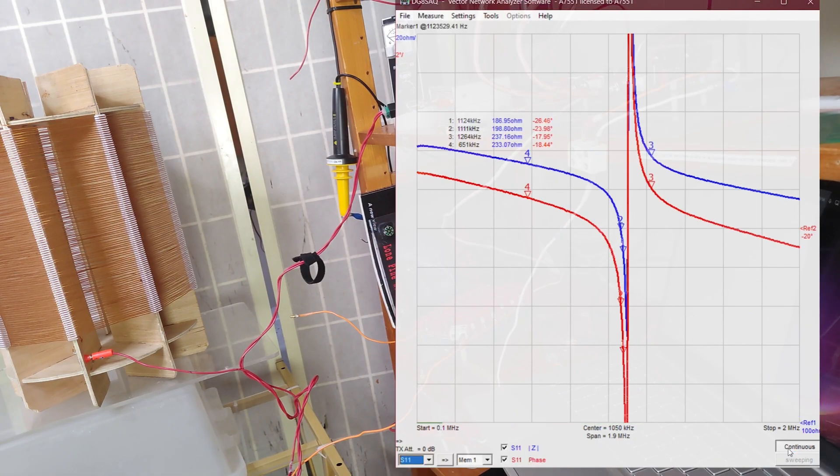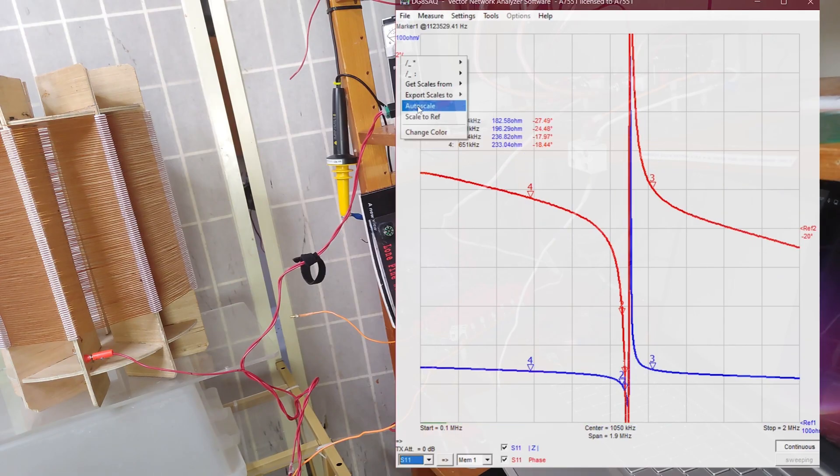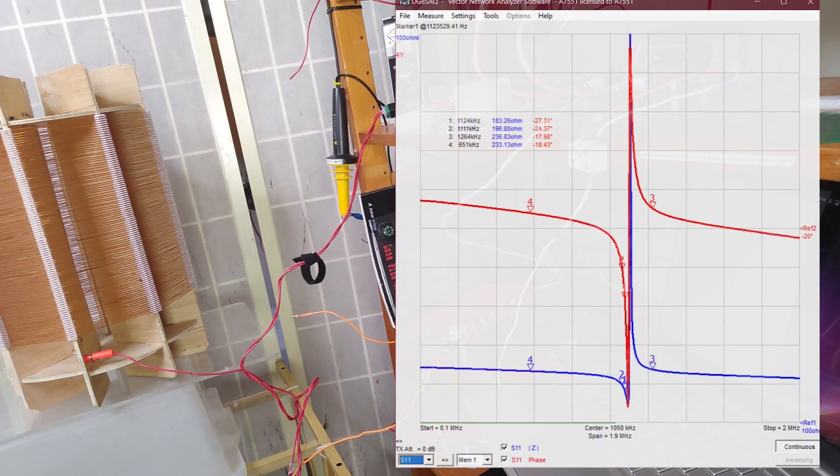This is the characteristic single coil shape. There's an impedance minimum at 0.1, that's the series mode resonance at 1140 kilocycles.